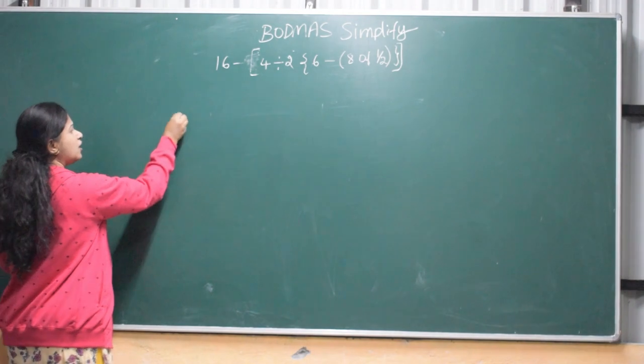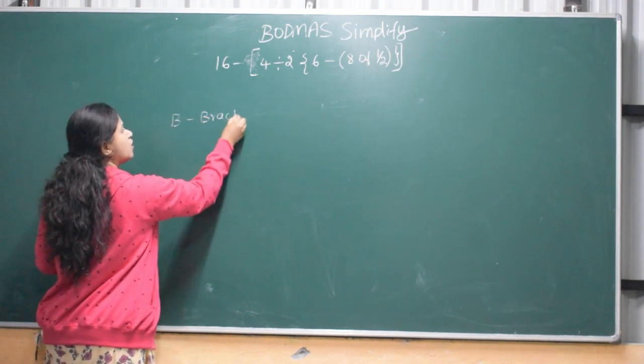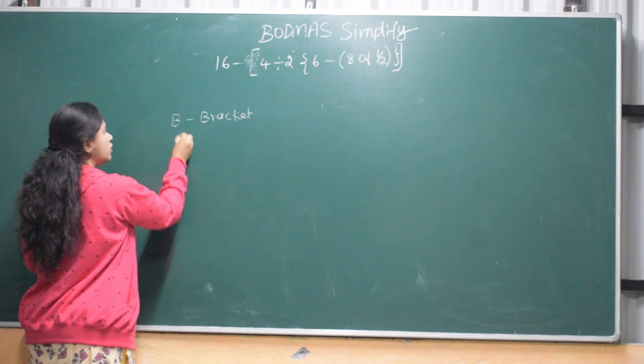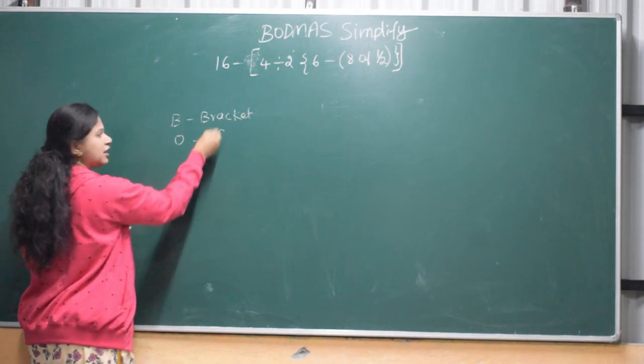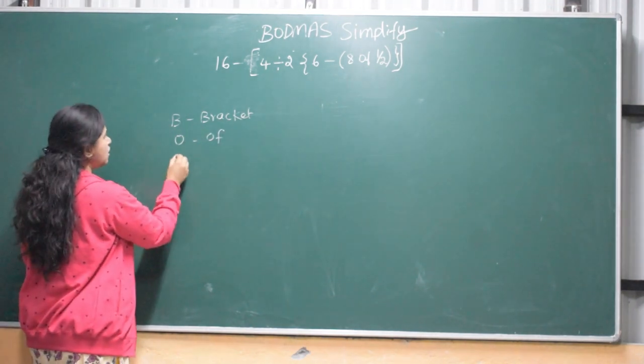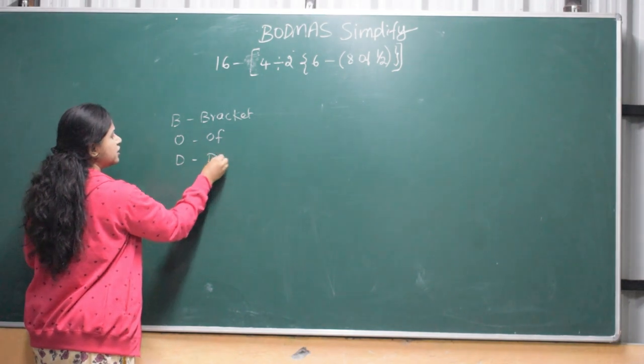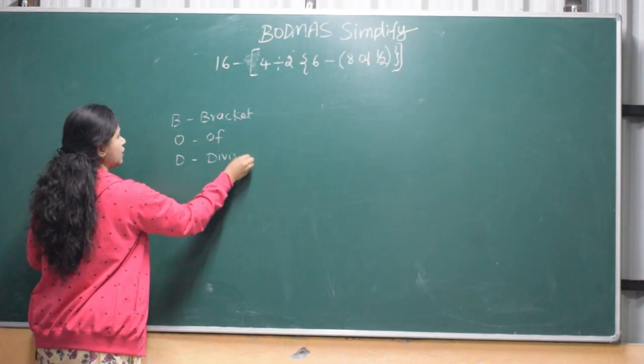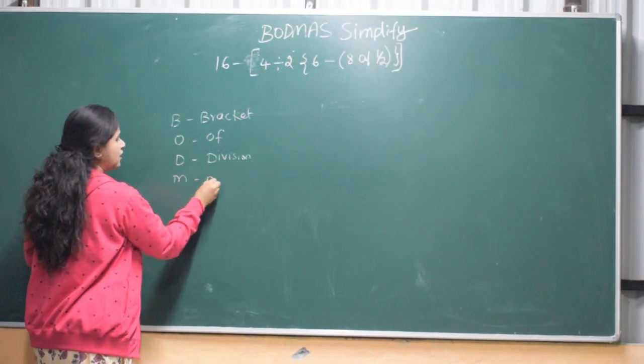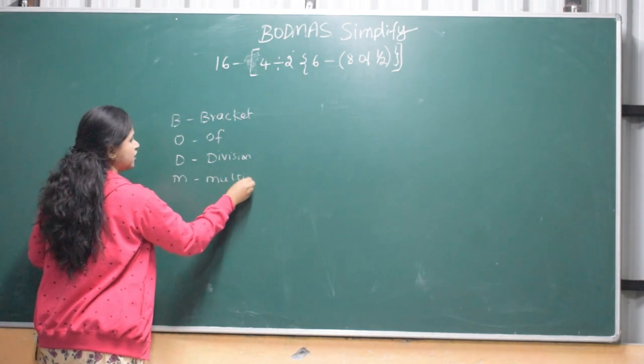B - Bracket. First, bracket. Now solve the problem. O - Of. B - Bracket. D - Division. M - Multiply, Multiplication.